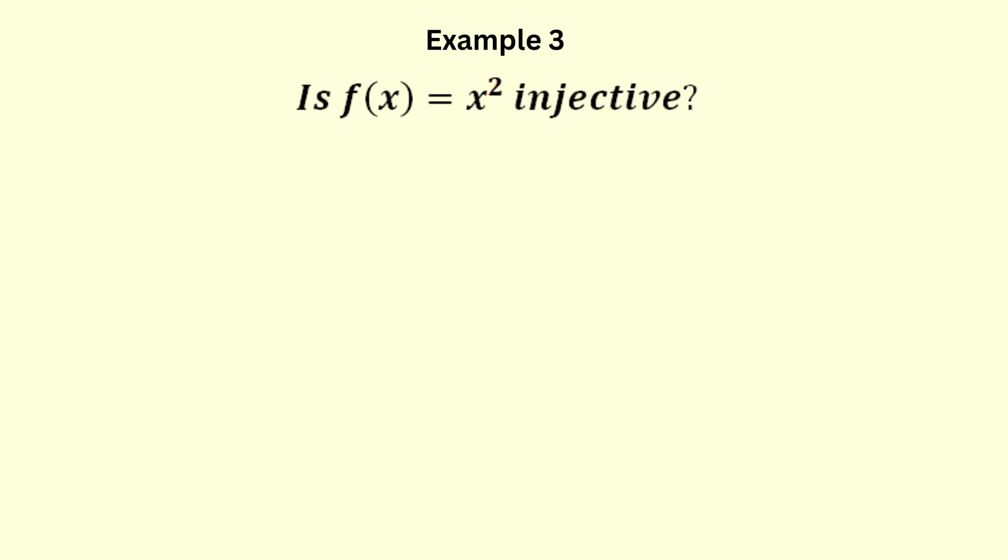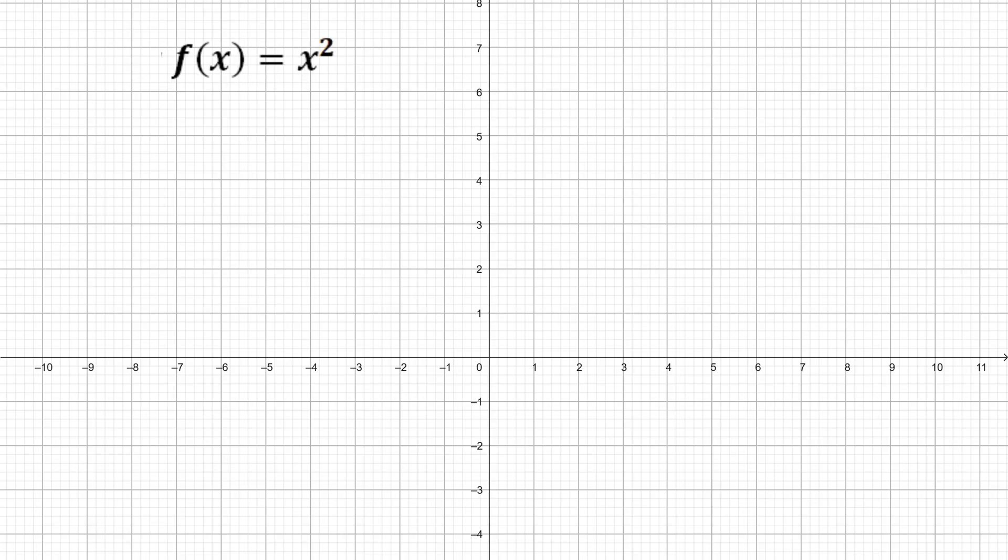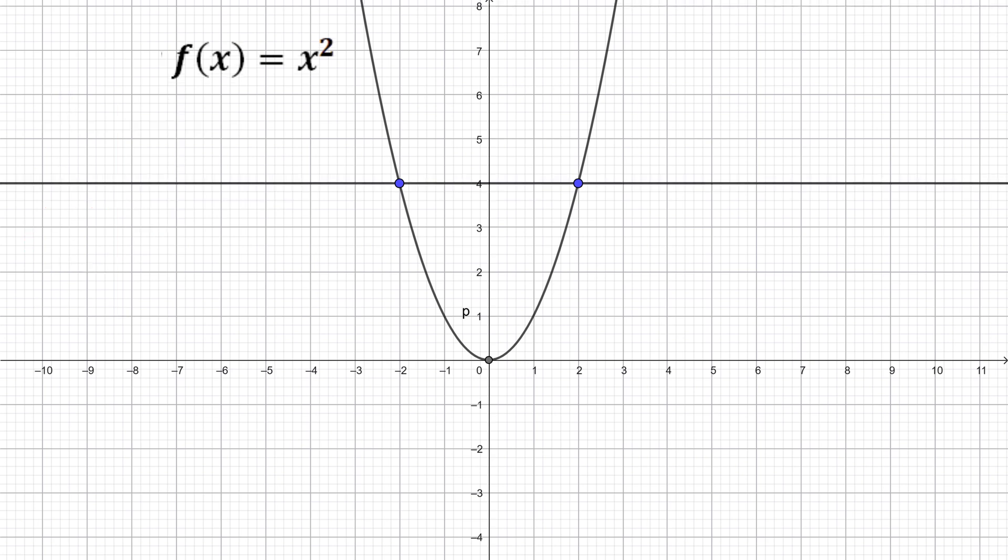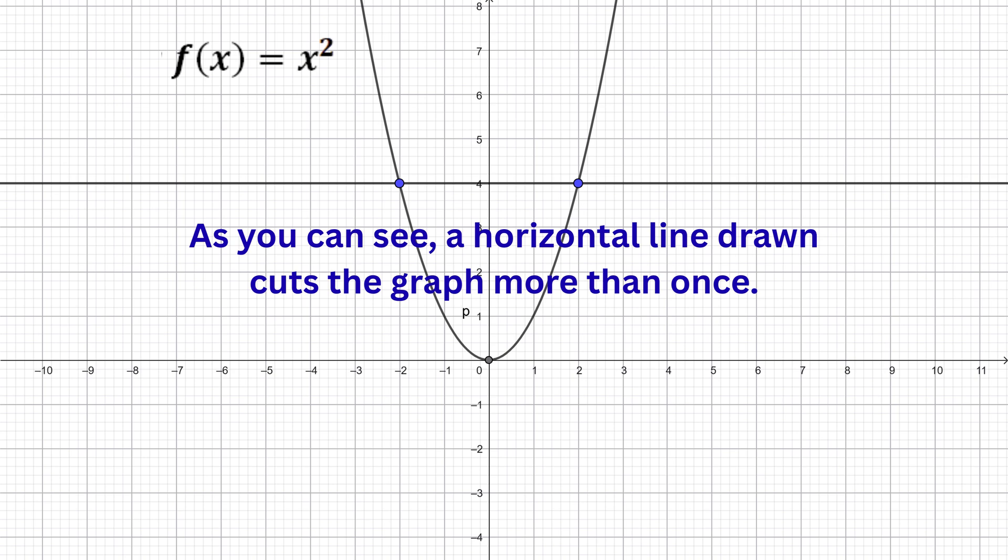To show this graphically we can draw a graph of the parabola by plotting some points from a table of values. When x equals 0, y equals 0. When x equals 2, y equals 4. And when x equals negative 2, y is also equal to 4. So, we have a many to one mapping. Since two different x values are mapped to the same y value. Graphically we can see a horizontal line cutting the graph two places, which tells us that the function is not one to one. Hence not injective.